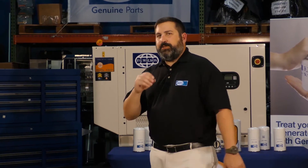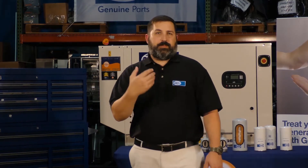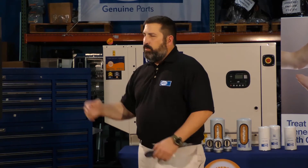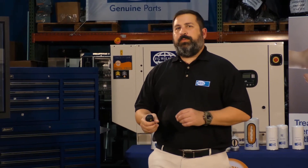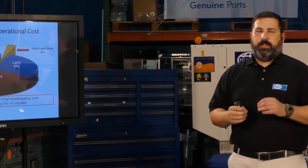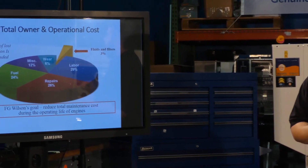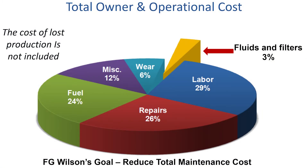As I showed you earlier, now that you've seen the information and we've had some good discussions — when you look at that total owning and operating cost and the 3% attributed to filters and fluids — do you think it's worth going to a lower-performing product to save a small portion at 3%? That can have a direct effect on all those other components, where you may not be able to get the best owning and operating costs that you expect.